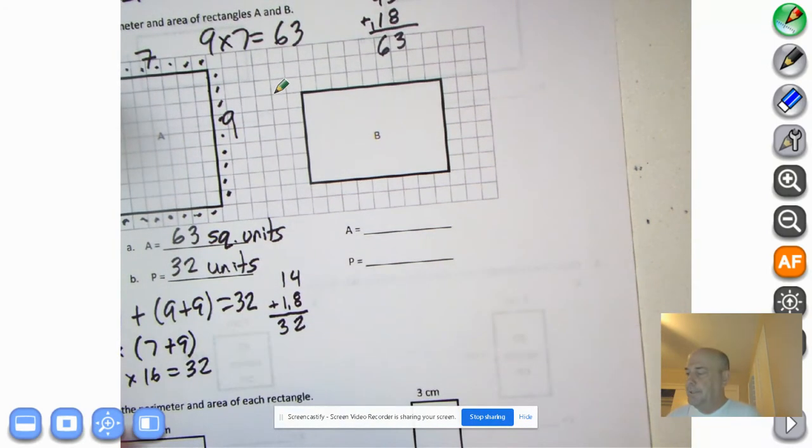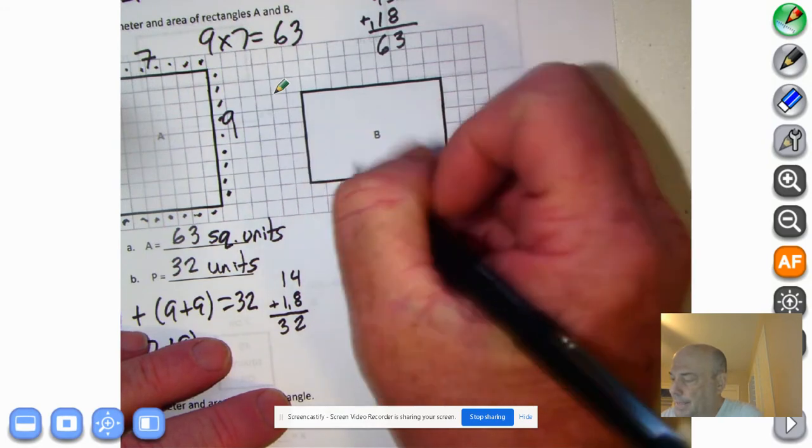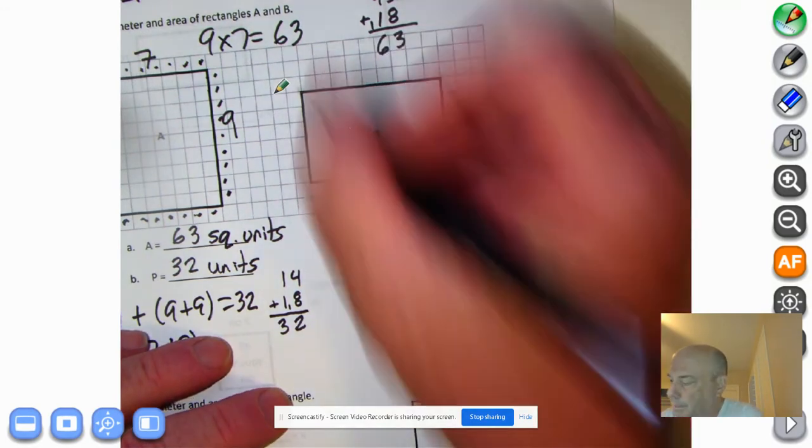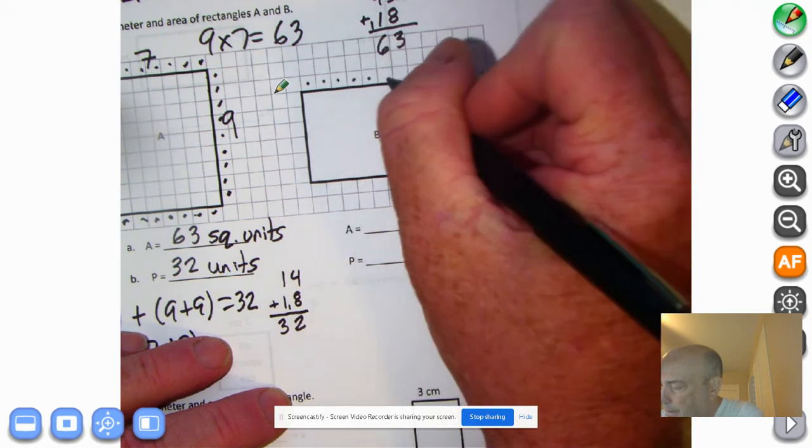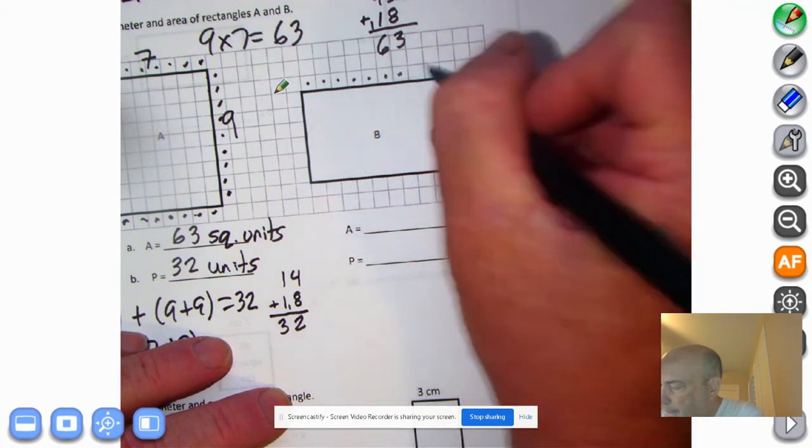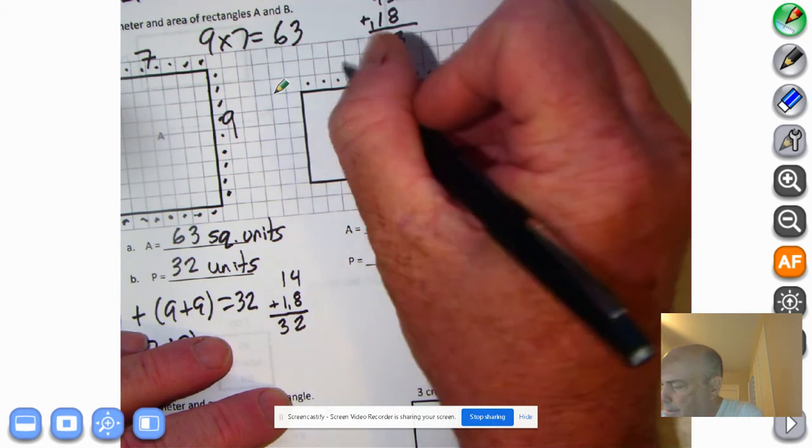Let's go to B. B is a little different because these squares are not inside the shape, but that's not going to prevent us from getting this down. Let's go one, two, three, four, five, six, seven, eight, nine. So there's nine units.